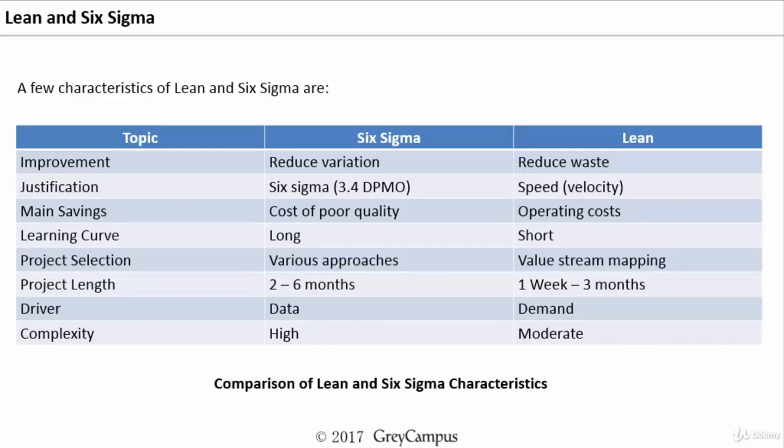With respect to any improvement, the improvement in Six Sigma comes because of reducing the variations. Applying the Six Sigma methodology will reduce the variations in the process, thereby reducing the rejection levels. Whereas the definition of Lean itself is identification and elimination of waste, so the improvement comes because of the reduction of waste through the Lean methodology.